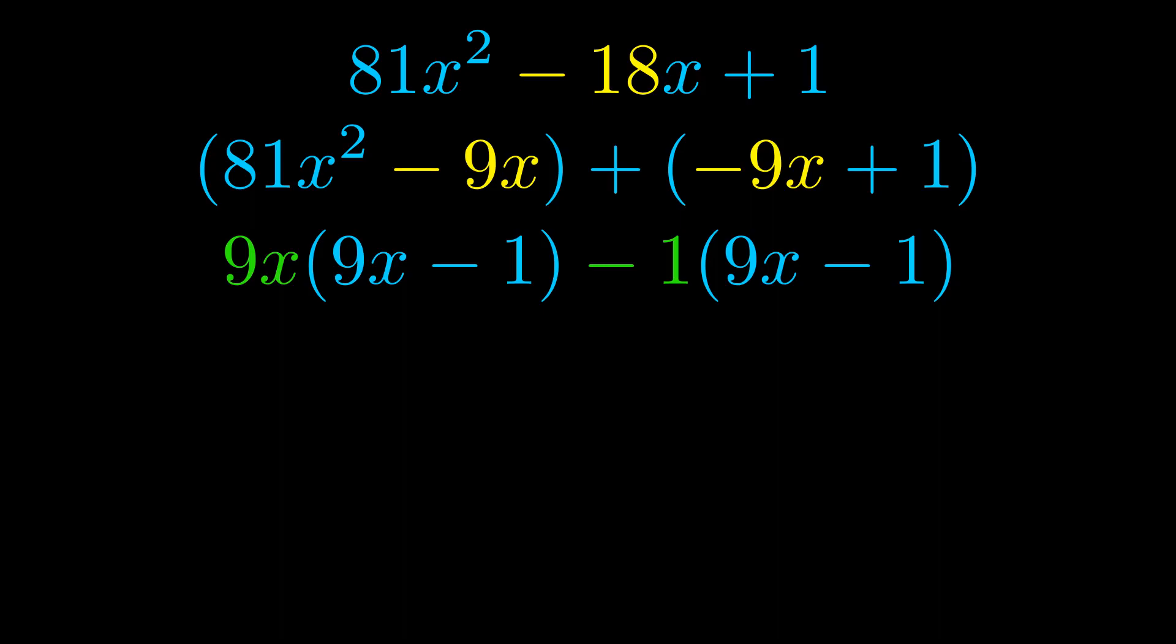Notice also how what remains inside of the parentheses is the same in both cases. The blue values are the same. Those blue values will become one of our factors and we will combine the two green values, the GCFs that we pulled out, to get the other one. And that is our fully factored equation.